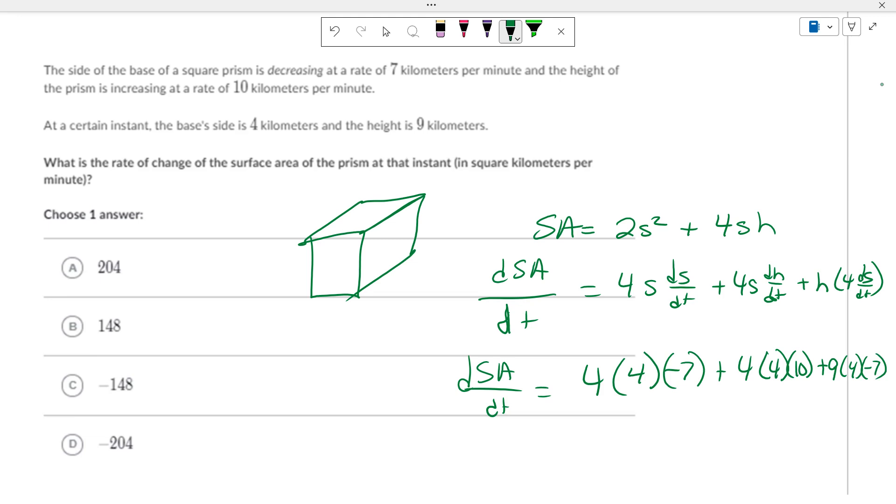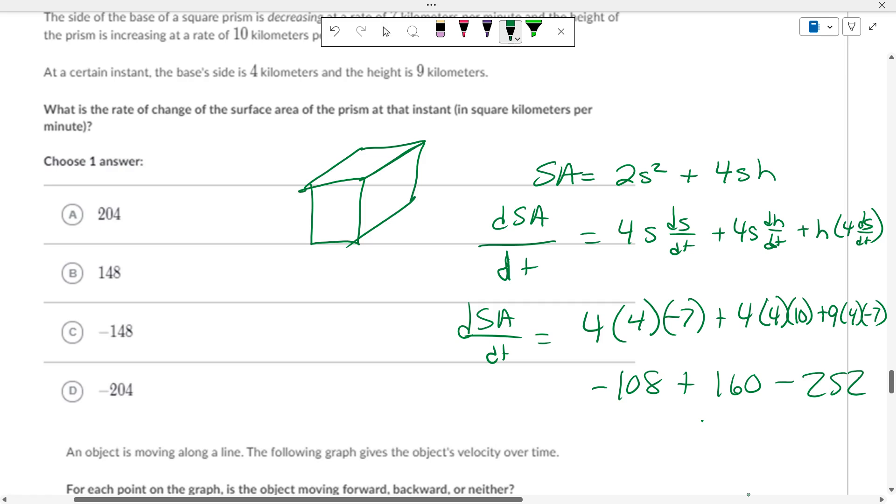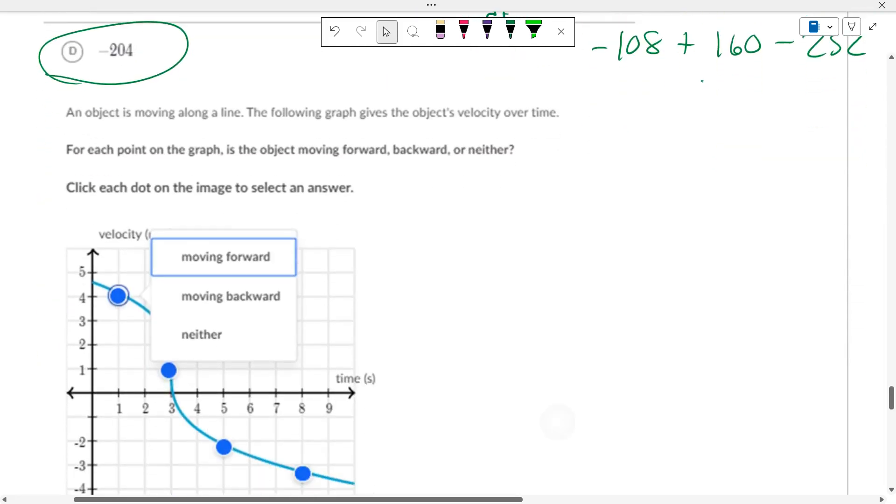And you got to do the math. This is, I don't know, 28 times 4, which is 56 times 2, which is 108. So, negative 108. So, negative 108 plus 160 minus 36 times 7. Or 63 times 4, which is 126 times 2, which is 252. 250 what? That's not 259. 36 times 7. Okay. So, this is 52 minus 250. So, like 204 negative.